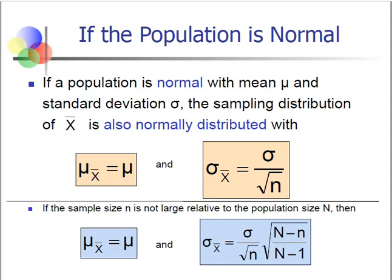Good morning and welcome back. We're now going into the second part of our discussion. We're talking about sampling and sampling distributions. We started with how to find the mean and the standard error of a sampling distribution, particularly of sample means. And now we'll go into how to calculate the probability of sample means.